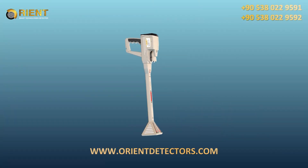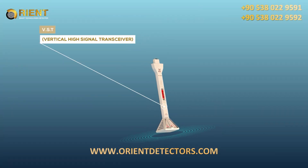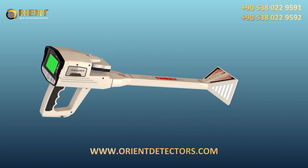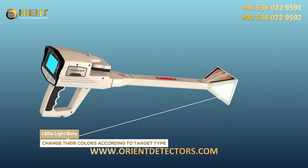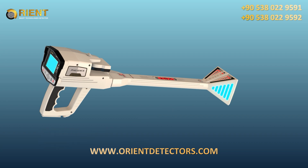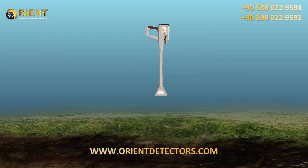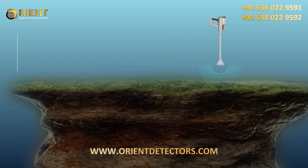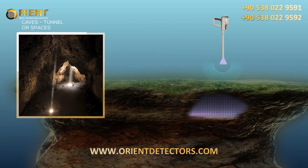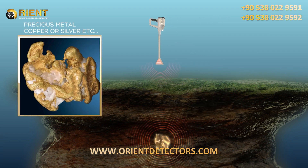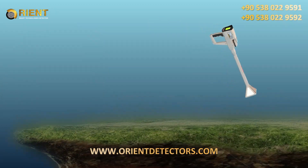The scanning process is done by the VST vertical high signal transceiver unit, which is a probe at the end of which there is a quadrilateral cone on both sides, with bars consisting of many light-emitting diodes (LEDs) that change their colors according to target type. For example, the LED lights will light up in blue when passing over a cavity or space such as a tunnel.